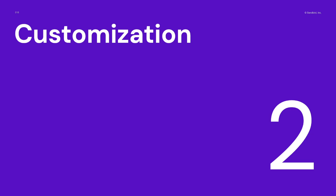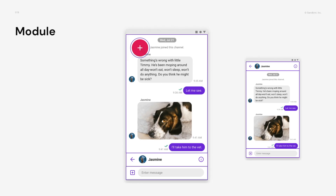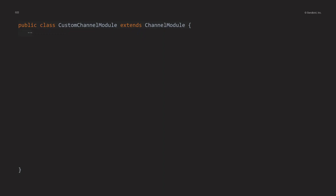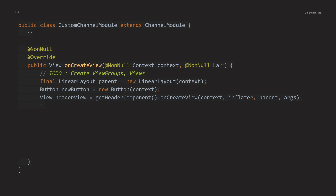Let's talk about customization. First is about customizing the module. There are two things you can do: first, you can change the layout position between existing components; second, you can add a new view. Let's take the channel module as an example. Inherit the channel module and overwrite the onCreateView method to change the layout and create new views. You can create a new view or view group using a context or inflator, and you can also get a component and use the view created by existing components.